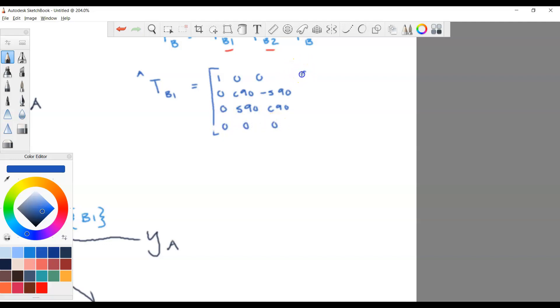So this is the homogeneous transformation matrix that you have to use. And since there's no translations, this part is just 0, 0, 0. So this will be... Cos 90 is 0. This is minus 1.